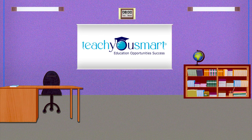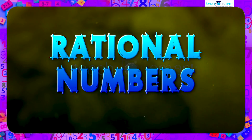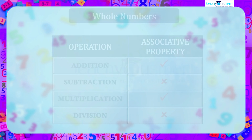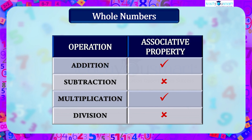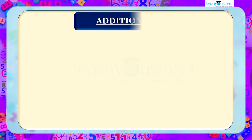Hello students, welcome to Teach You Smart. Let's continue our journey through rational numbers. In the previous session we had seen that both addition and multiplication are associative for whole numbers. Today we are going to check the associative property of integers. We will start with addition.